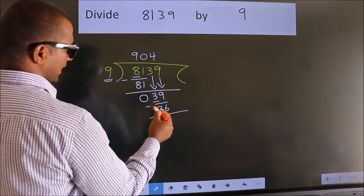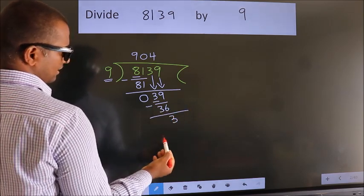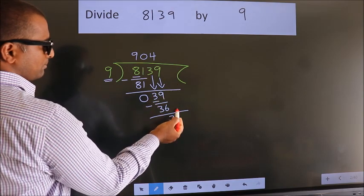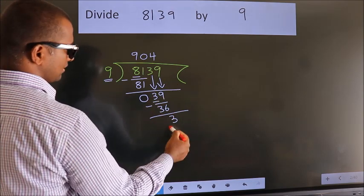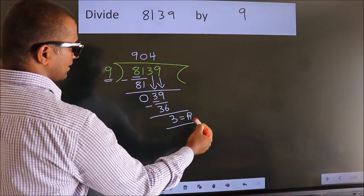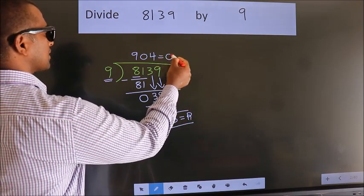Now we subtract. We get 3. No more numbers to bring down, so we stop here. This is our remainder. This is our quotient.